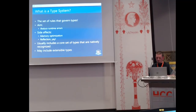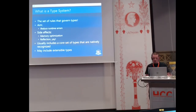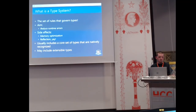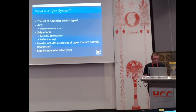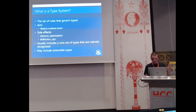A type system itself usually includes a core set of types that are natively recognised within the programming environment. In PowerShell or any .NET language, a string or an integer are examples of the core set of types that come out of the box — nobody needs to define these. And it may include extensible types as well, depending on the environment and programming language.